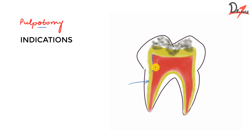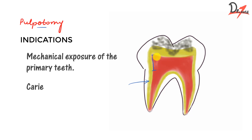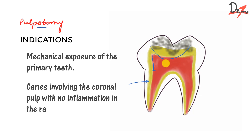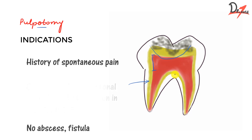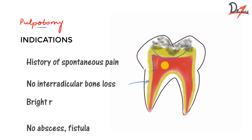What are the indications of pulpotomy? When there is mechanical exposure of the primary teeth; a tooth where caries involves the coronal pulp but the radicular pulp should be free of any inflammation; there should be no abscess or fistula; the patient should have a history of spontaneous pain; no inter-radicular bone loss on the radiograph. A key clinical sign: when we remove the coronal portion, there should be bright red bleeding that can be controlled. If bleeding is uncontrollable or is dull red, we may need to reconsider.